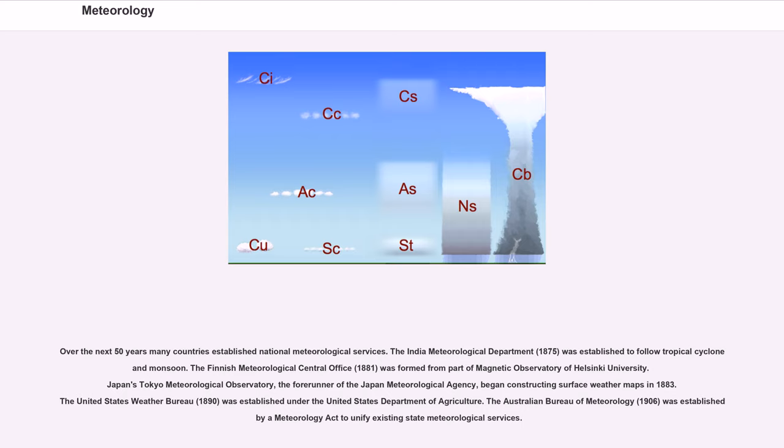The India Meteorological Department, 1875, was established to follow tropical cyclone and monsoon. The Finnish Meteorological Central Office, 1881, was formed from part of Magnetic Observatory of Helsinki University. Japan's Tokyo Meteorological Observatory, the forerunner of the Japan Meteorological Agency, began constructing surface weather maps in 1883. The United States Weather Bureau, 1890, was established under the United States Department of Agriculture. The Australian Bureau of Meteorology, 1906, was established by a meteorology act to unify existing state meteorological services.